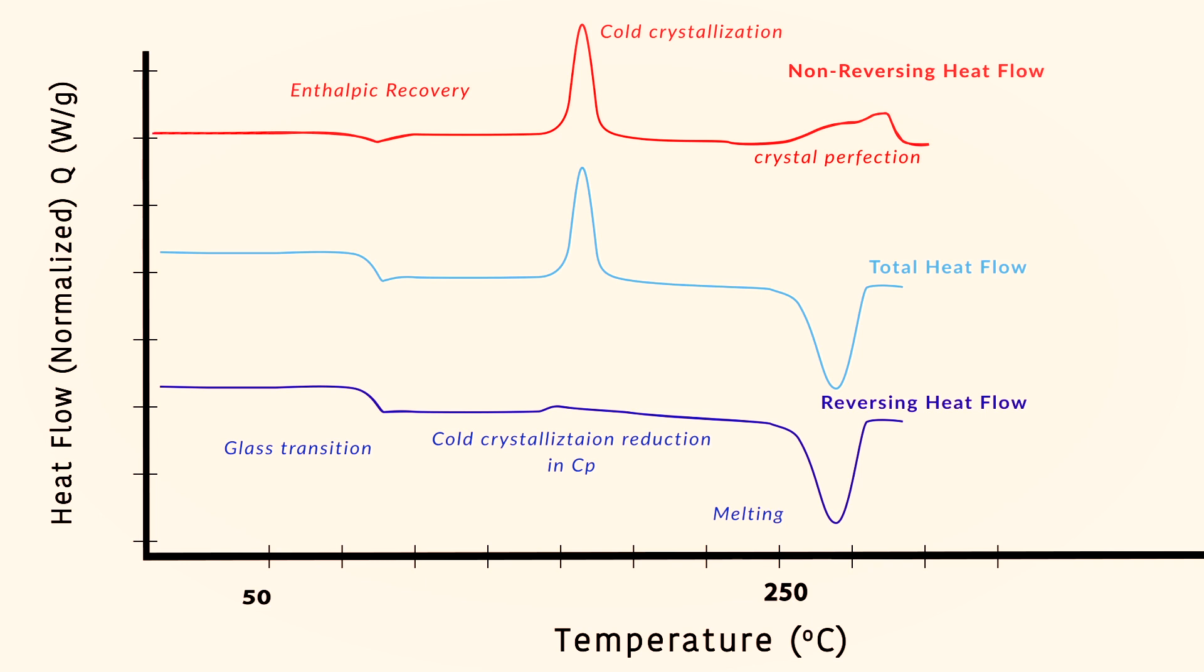Now let's look at the non-reversing signal. As we begin to heat the sample, we can see a small blip in the curve, which is the enthalpy recovery that we discussed in the previous sessions. In the conventional DSC, the glass transition and the enthalpy recovery both overlapped and we could not resolve these two components separately. As we continue to heat the sample, cold crystallization of the amorphous PET material is seen, and this curve continues to have an exothermic reaction, as can be seen through the crystal perfection, which happens right near the melting point.